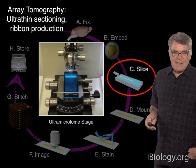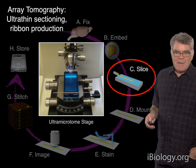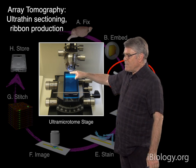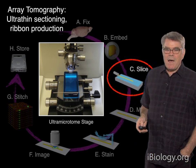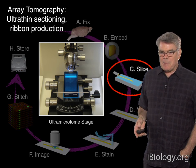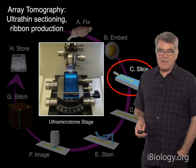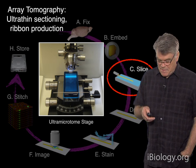Zooming in a bit, this is the diamond knife boat mounted on the stage of the ultramicrotome. The tissue itself is chucked up where my fingertip is pointing. The blue item is a boat full of water — the water is actually critical. At the point where that boat meets the specimen, there is a diamond knife blade. This is a very, very sharp knife — a big piece of the trick of cutting tissue as thin as tens of nanometers.